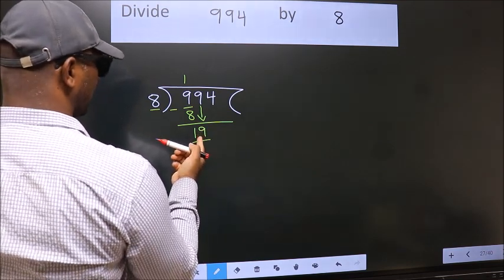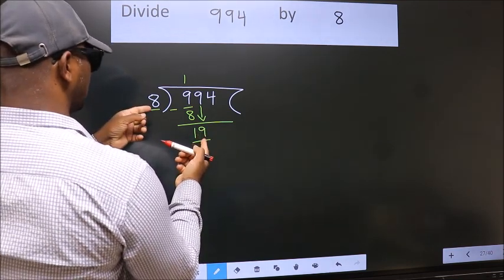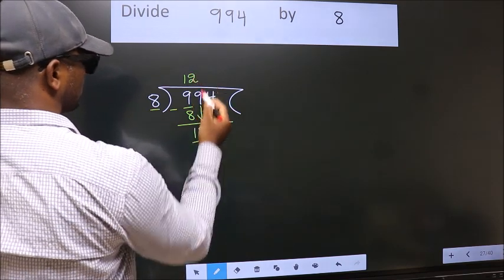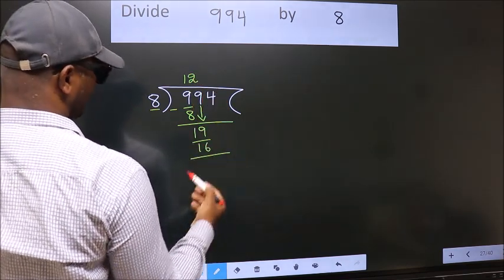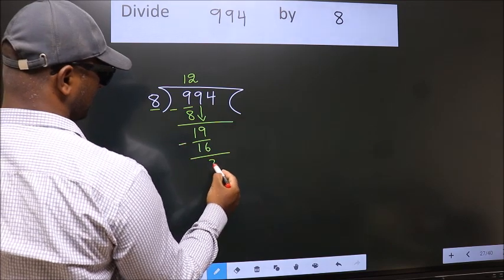A number close to 19 in 8 table is 8 twos 16. Now we subtract. We get 3.